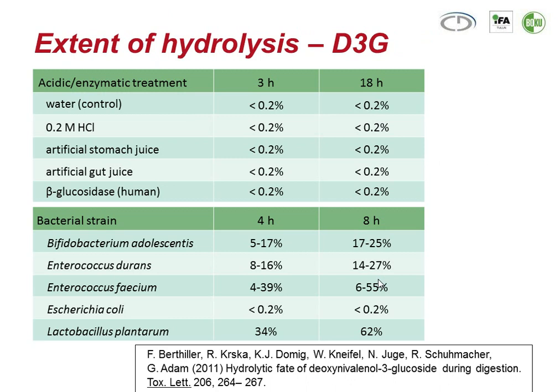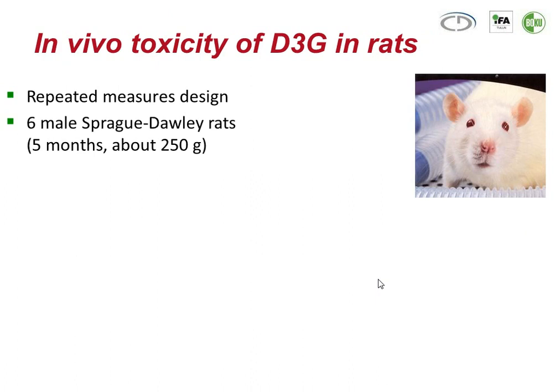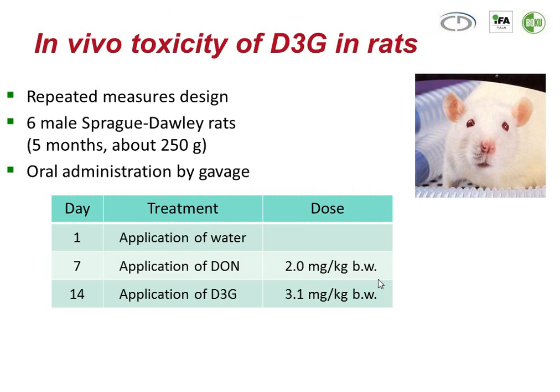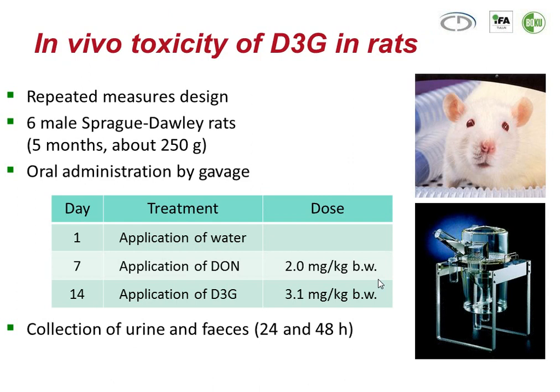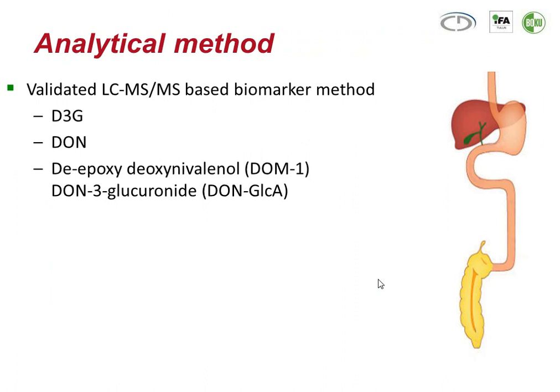The next step was to test in vivo toxicity. We performed experiments testing the in vivo toxicity of deoxynivalenol-3-glucoside in rats using a repeated measures design. On the first day, animals received water as a negative control by gavage. A week later, we applied deoxynivalenol at 2 mg per kg body weight. And a week later, we applied the equimolar amount of DON-3-glucoside. We collected urine and feces excreted after 24 and 48 hours.